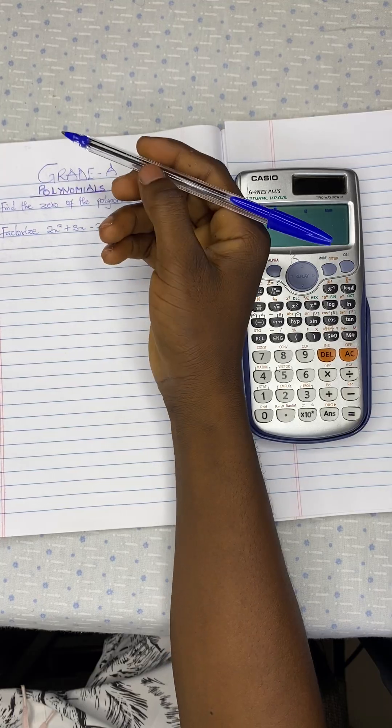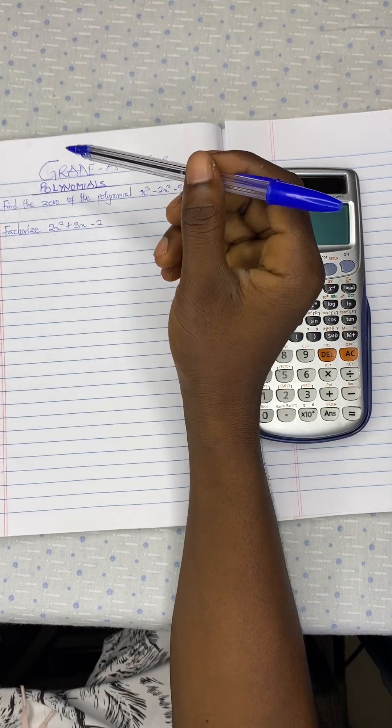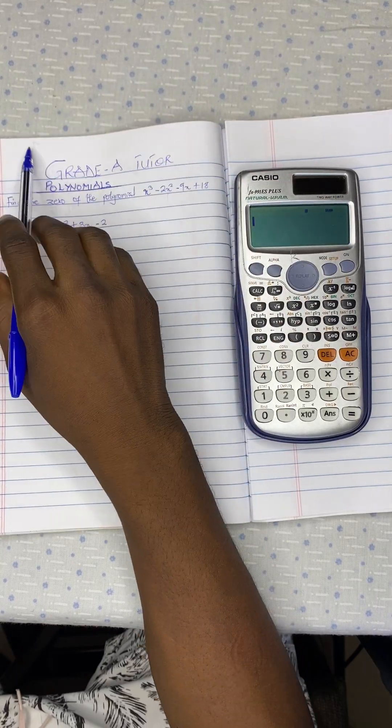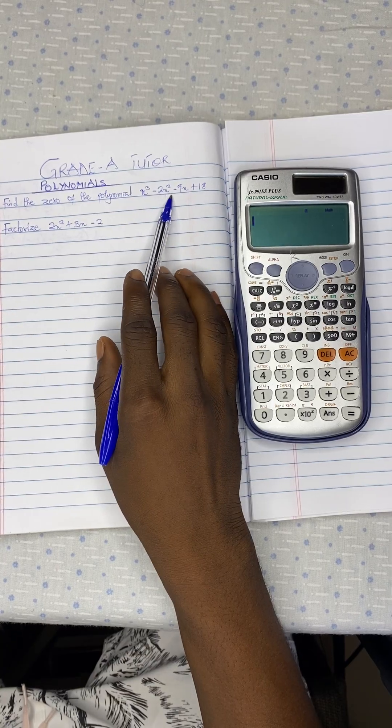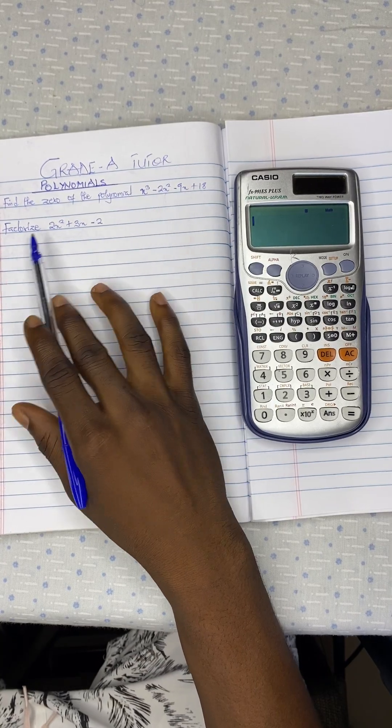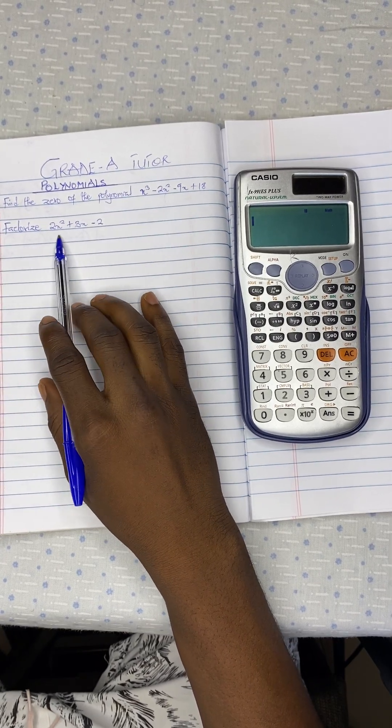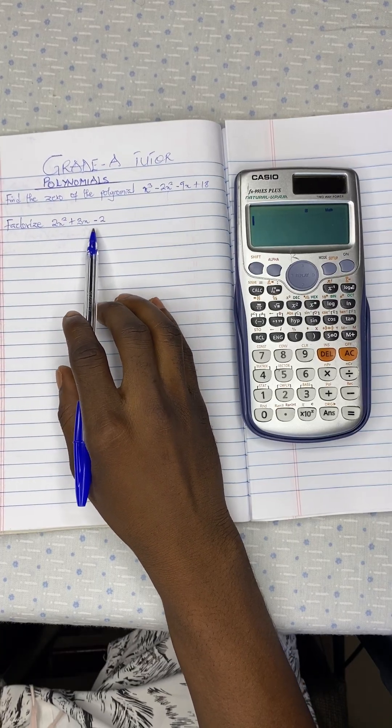We have two questions here. Question 1 says, find the zeros of the polynomial x cubed minus 2x squared minus 9x plus 18. And question 2 says, factorize 2x squared plus 3x minus 2.